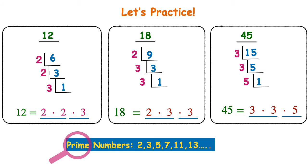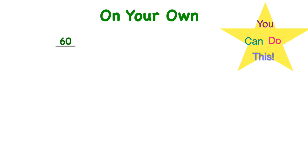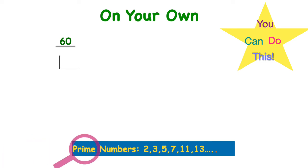Let's try some on your own. Use the number 60 at the top of your ladder. Don't forget to make that L and start with the smallest prime number, 2. Does 2 go into 60? Yes — it goes in 30 times. Continue down your ladder. Go ahead and pause your video and finish this problem.